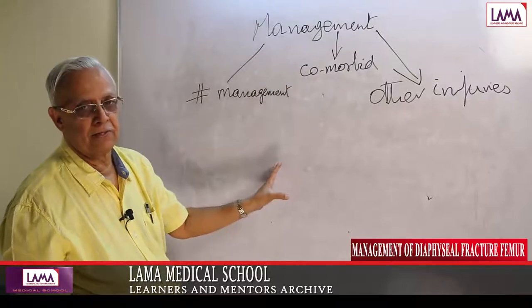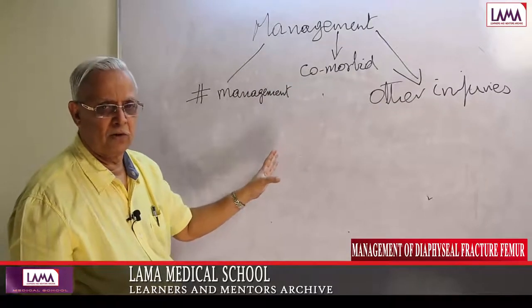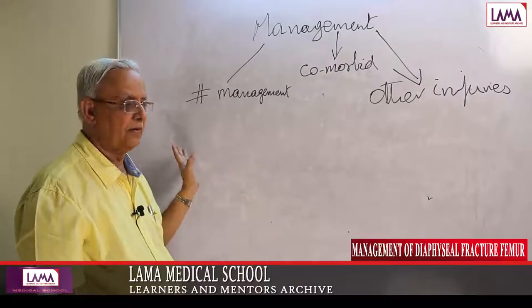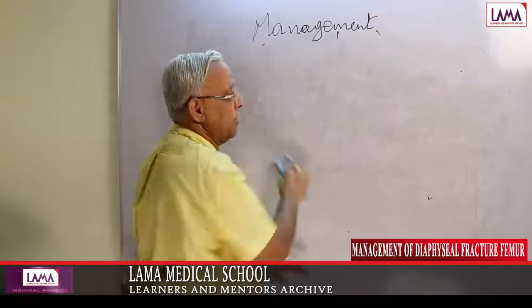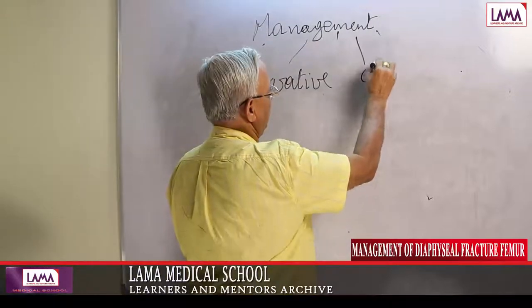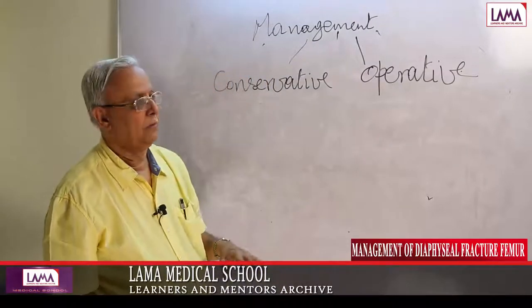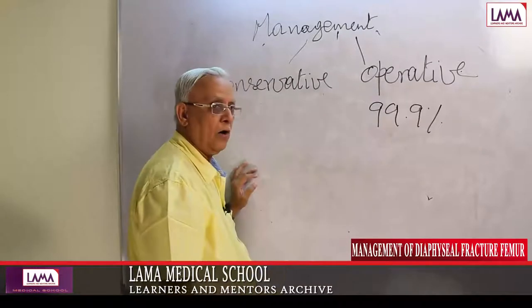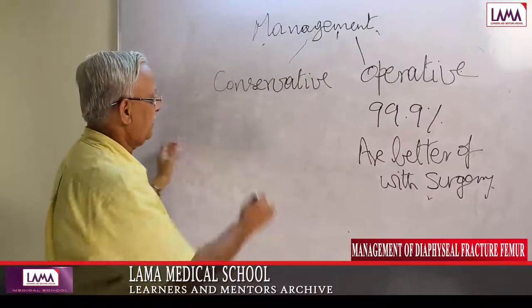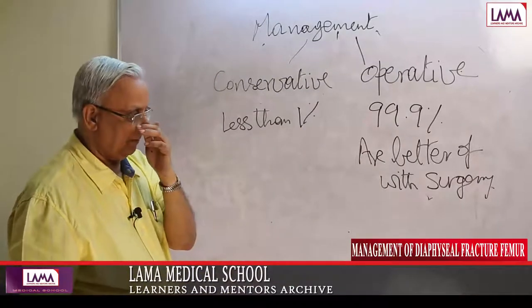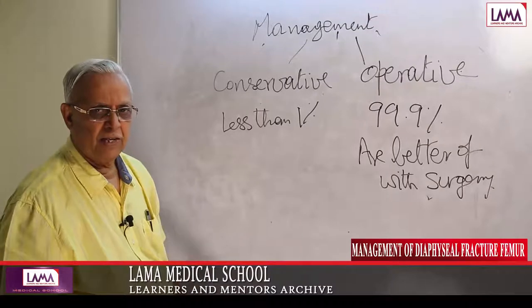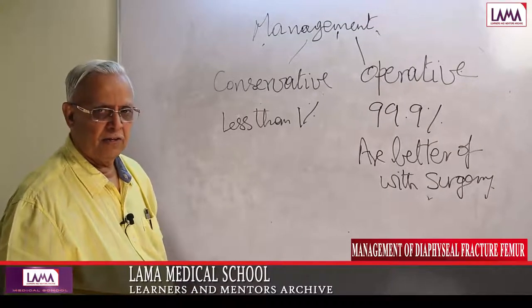If the patient is in shock, give adequate blood and fluids, stabilize, and then take the patient to surgery. For management, there are two options: conservative and operative. Nowadays, 99.9% of patients are better off with surgery. Only less than 1% require conservative management — because of poor general condition, patient refusal, or inability to afford surgery.